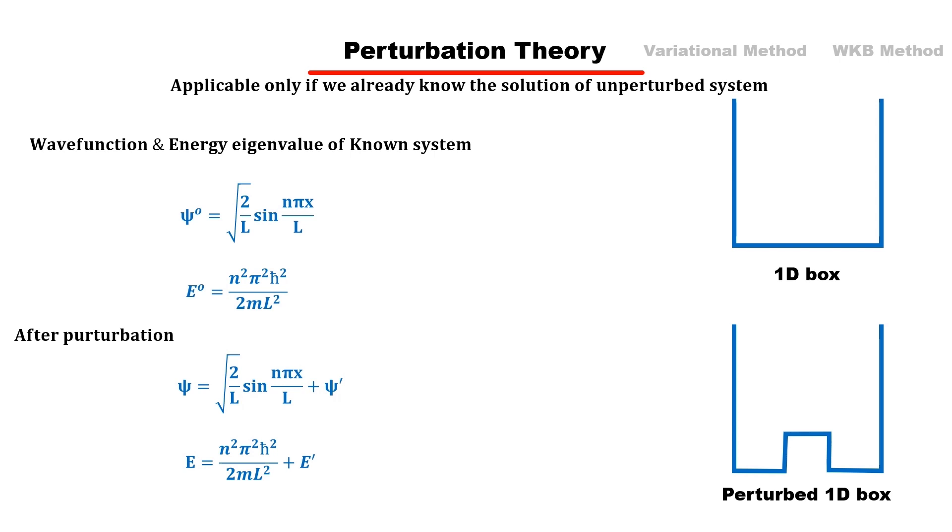The perturbation theory requires that the exact solution of the unperturbed system be known. If we do not know any wave function or eigenvalue of a system, then in that case, variational or WKB approximation method is used.